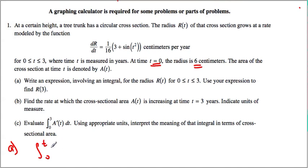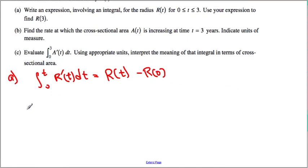so I'm going to call it r prime t dt, which represents big R of t minus R of 0. But we know R of 0 is equal to 6, so therefore, we can write it as R of t is equal to R of 0, which was 6, plus integral from 0 to t of r prime of t dt. That becomes our answer.